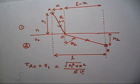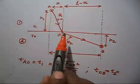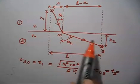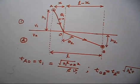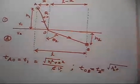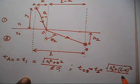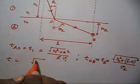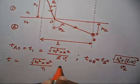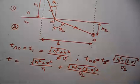Now, the time T2 required to travel from O to B: the horizontal distance is L minus X and the vertical distance is H2, so the distance is √(H2² + (L−X)²). Dividing by V2 gives T2. The total time is T = √(H1² + X²)/V1 + √(H2² + (L−X)²)/V2.